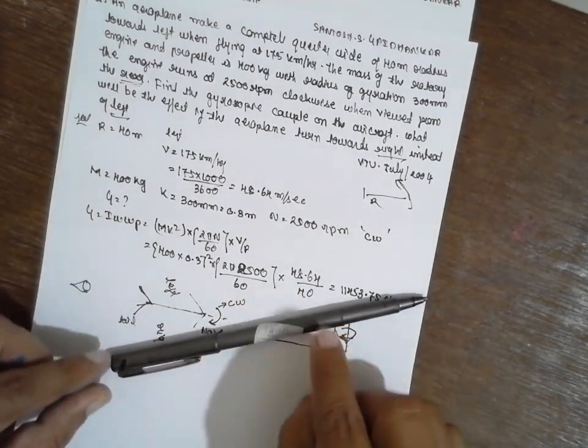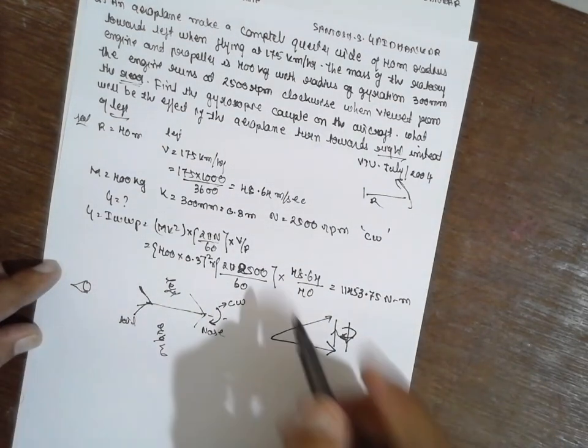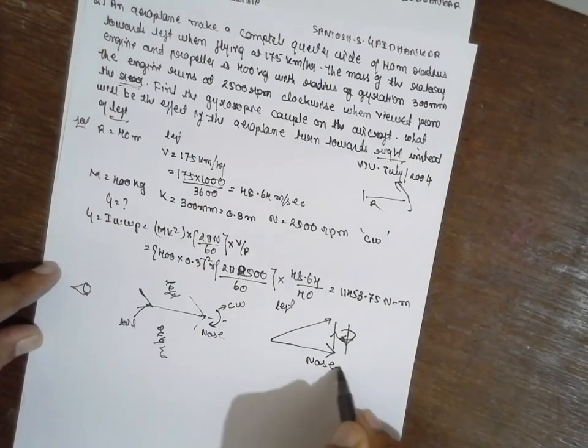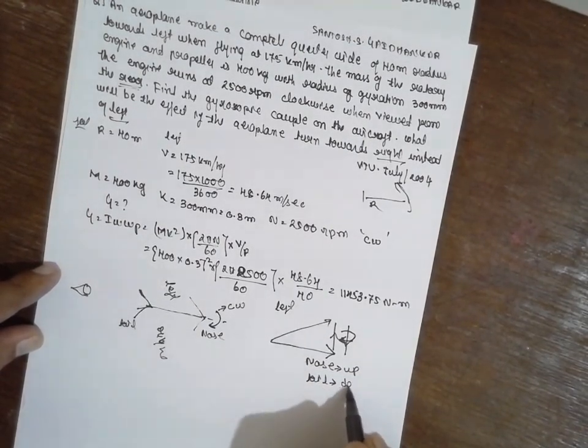When it moves in this way, now as per the diagram, the nose will be up, tail will be down. This is for left. Nose up, tail down. This is the effect.